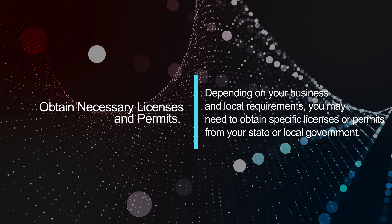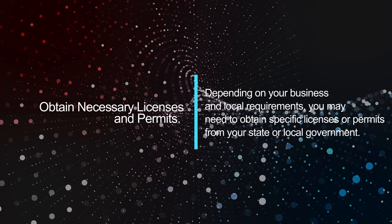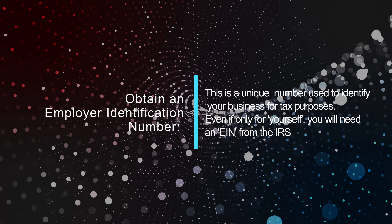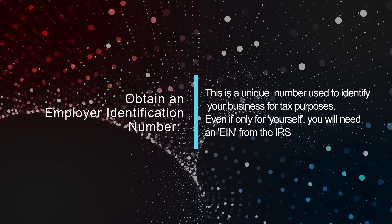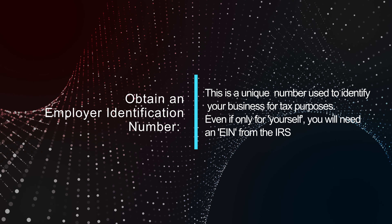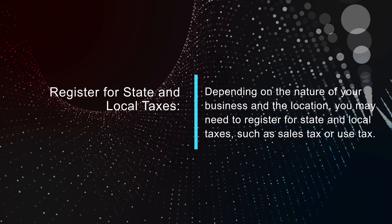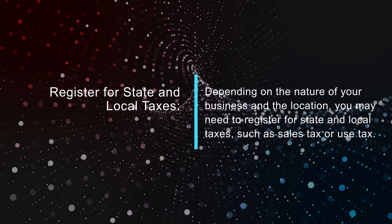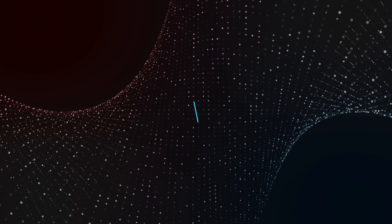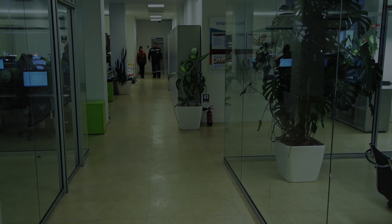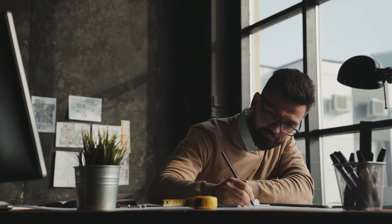Obtain required licenses and permits. Depending on the nature of your business, you may need to obtain specific licenses or permits from your state or local government. Obtain an employer identification number. If your business has employees — or even if only for yourself — you will need to obtain an EIN from the Internal Revenue Service. Depending on the nature and location of your business, you may need to register for state and local taxes such as sales tax or use tax. Open a business bank account once you have registered your business. This will help you keep business and personal finances separate, make it easier to track business expenses, and it is often a requirement for other registrations in this process.